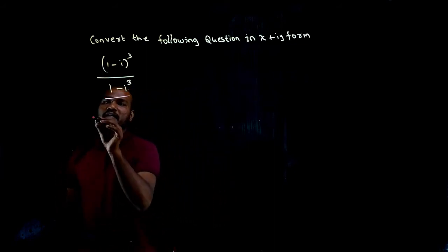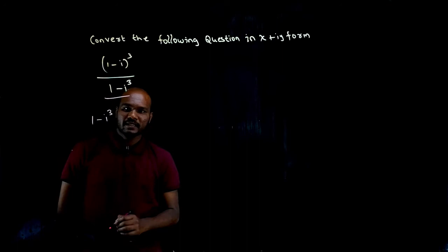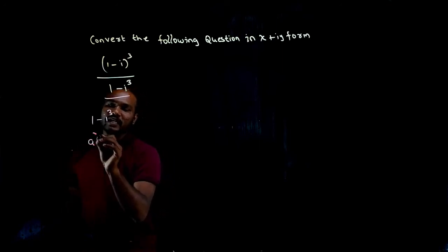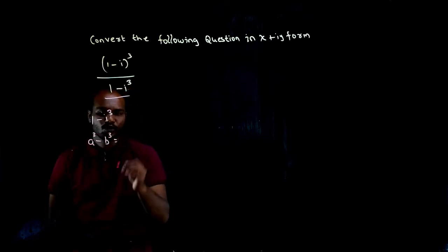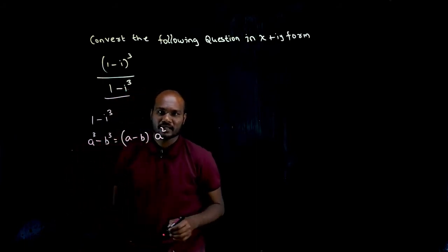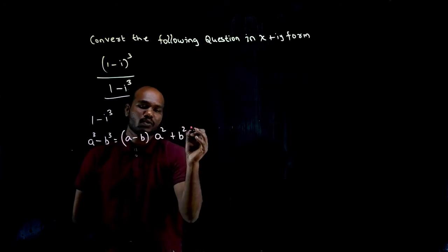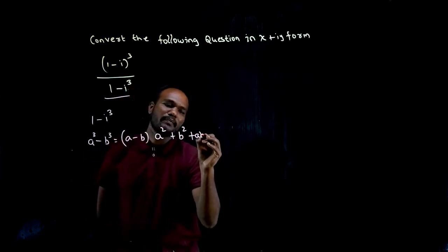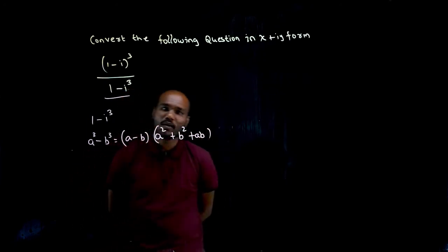See here, it looks like (1-i)³, right? (1-i)³ exactly looks like a³ minus b³. What is a³ minus b³? (a-b) times (a² + b² + ab). This is the formula you need to know.